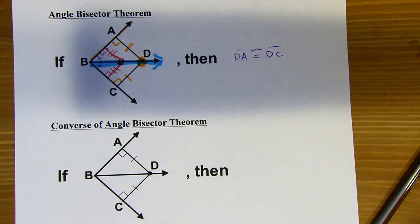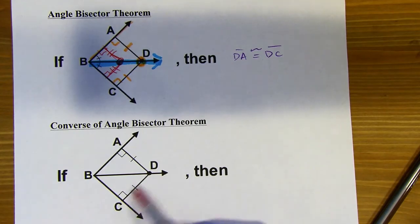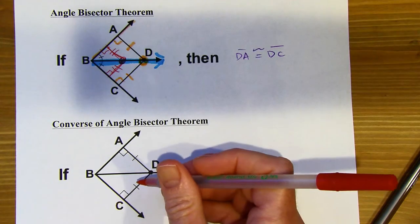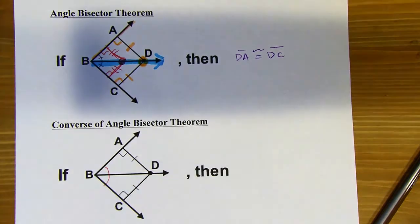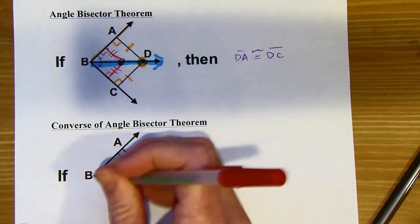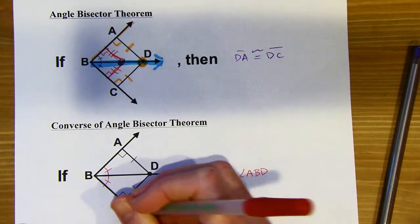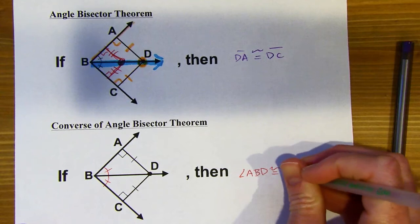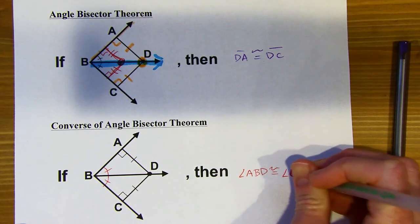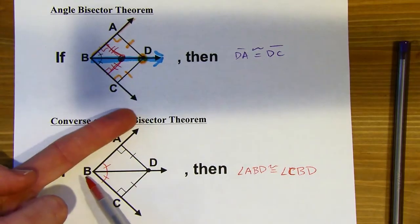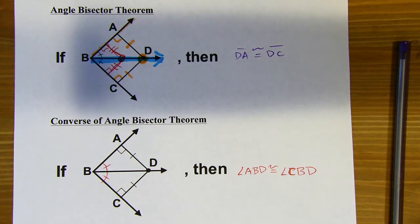The converse of the Angle Bisector Theorem: if point D is equidistant from the two sides of an angle, then point D is going to have to be on the angle bisector. That means those two angles are going to be congruent — I'll call the top one angle ABD and the bottom one angle CBD, and they're congruent to each other. So if a point is equidistant from the two sides of an angle, then it must be on the angle bisector of that angle.